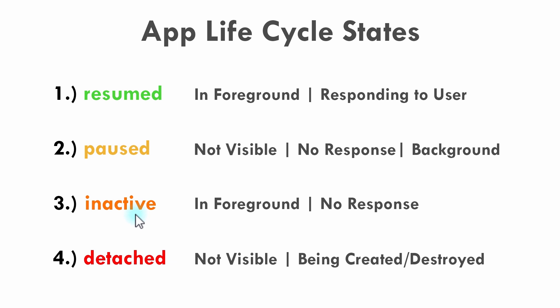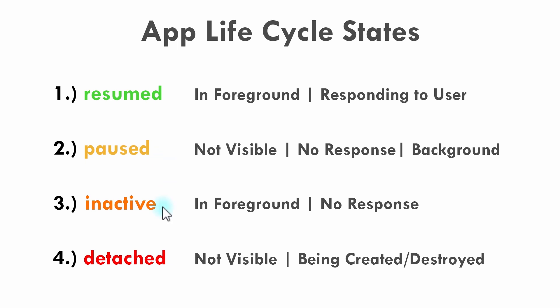The inactive state is a bit complex — the application is likely in the foreground but not currently responding to user input. We'll take a look at this inactive state in more depth shortly. The detached state is when the screen is not visible to the user, whether it's being created or destroyed on an event like navigation pop. The three main states to concern yourself with are resumed, paused, and inactive.